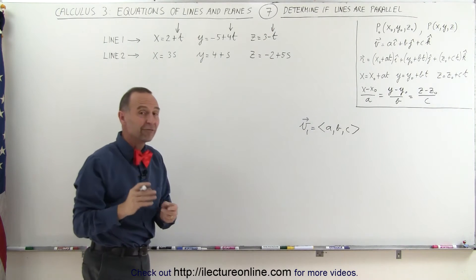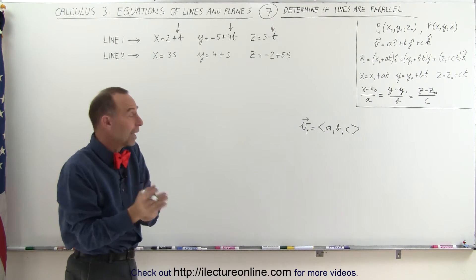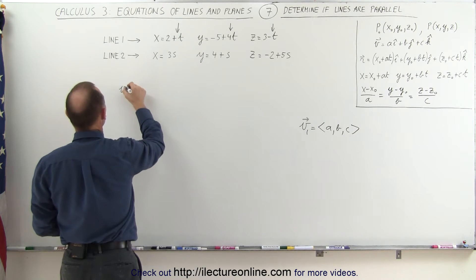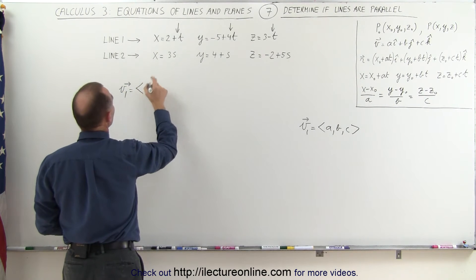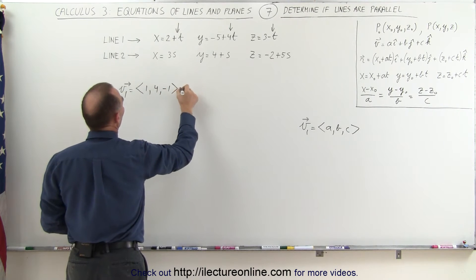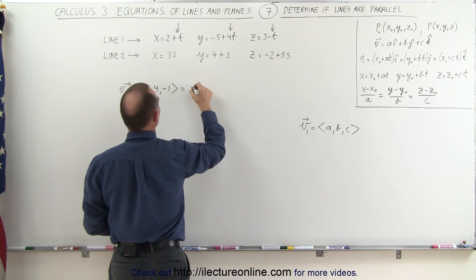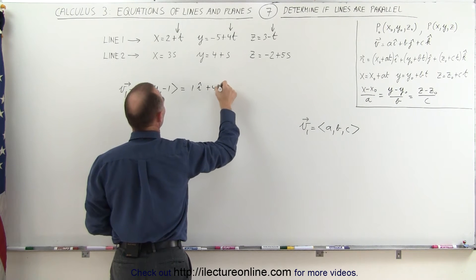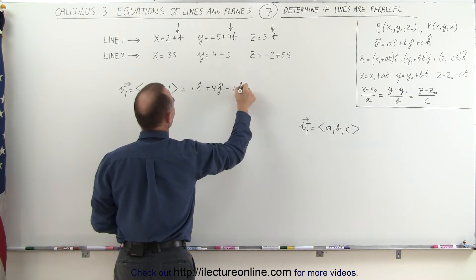Which means if I'm going to find vector V1 which is parallel to line 1, I can say that V1 is equal to the vector 1, 4, and negative 1, or we can write the vector as follows: 1 times I plus 4 times J minus 1 times K.